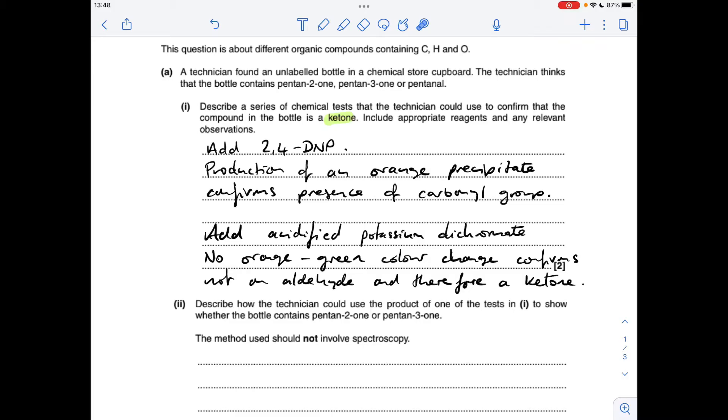So what we need to do now is rule out the fact that it could be an aldehyde. There's a couple of ways to do that. The first way is you could add acidified potassium dichromate. Now remember, aldehydes can be oxidized to carboxylic acids, so if this is a ketone it won't be oxidized, so you won't get the orange to green color change. So that's confirming it's not an aldehyde and therefore a ketone.